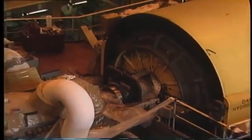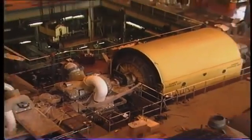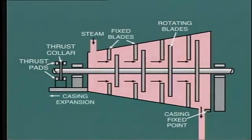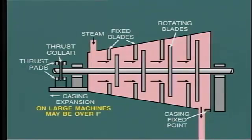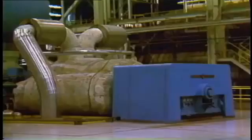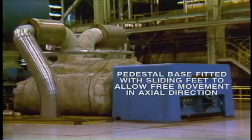During construction and maintenance, thrust pads are carefully set to ensure that correct clearances exist between rotating and stationary parts. Allowance must be made for the casing to expand as it becomes heated by the steam flow. In a single cylinder machine, the normal method is to anchor the machine solidly at the low pressure end—at the turbine exhaust—and allow the front end pedestal to move forwards. In large machines, the expansion in this longitudinal direction may be over one inch, that is 25 millimeters. A more common arrangement on larger machines is to fit the base of the pedestal with sliding feet to allow free movement in the axial direction.